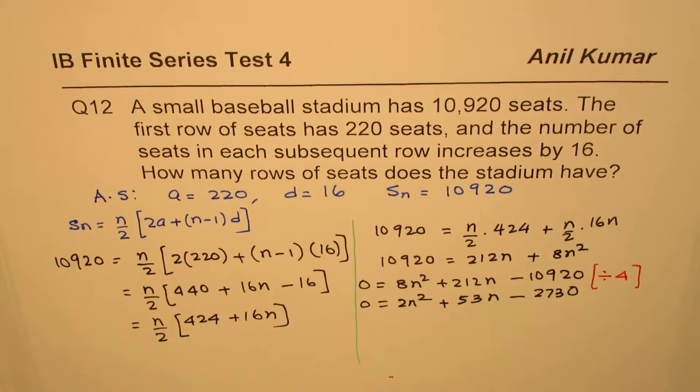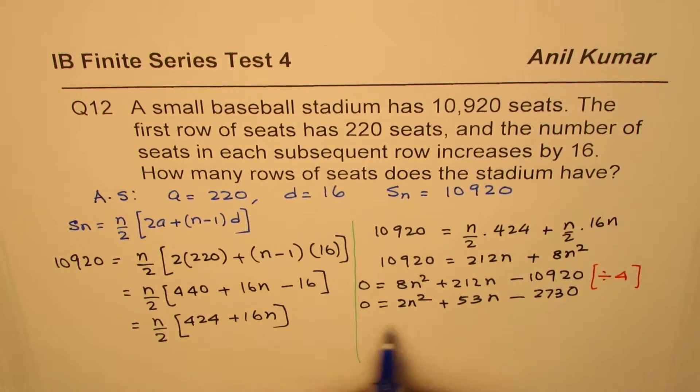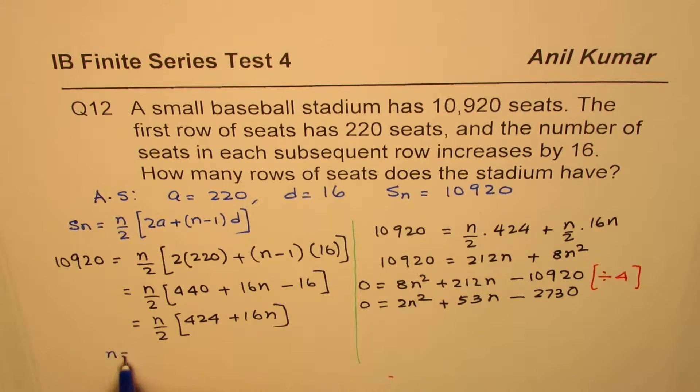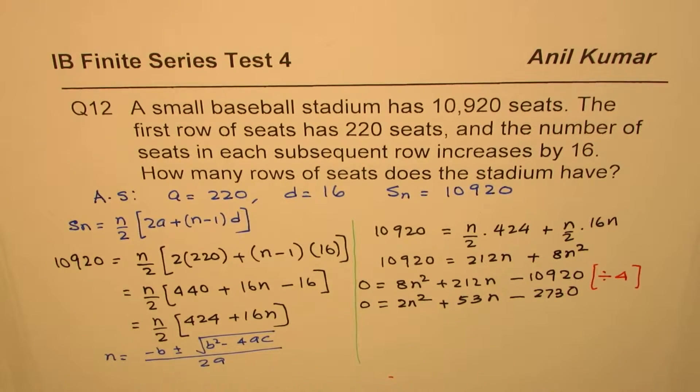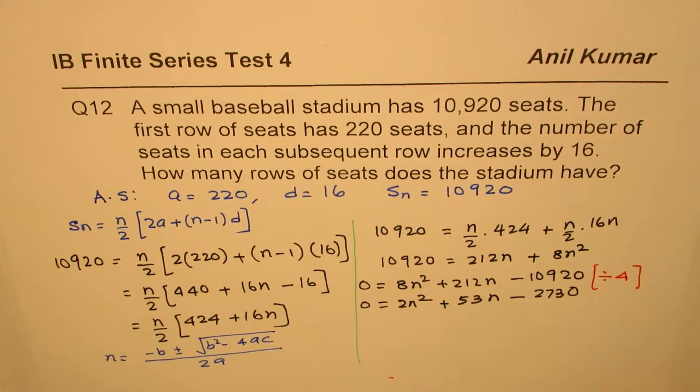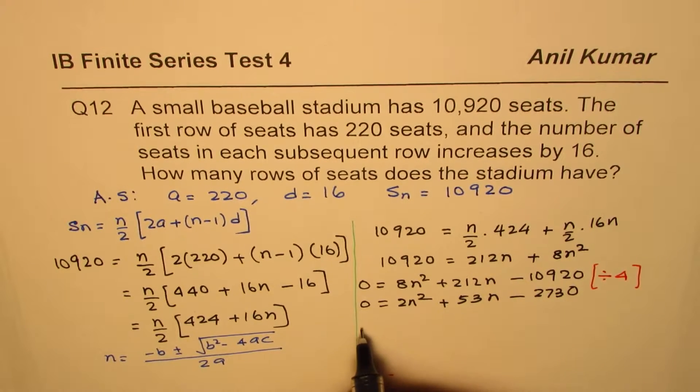Now you can use the formula. So in this equation, the formula could be n equals to minus b plus minus square root of b² minus 4ac divided by 2a. So that is good way of finding the answer. Let's use the quadratic formula and find what is the value of n.